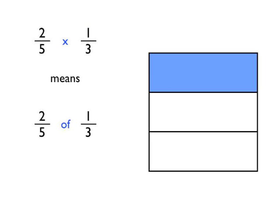Now, what you need to remember when we're multiplying fractions is that the times sign actually really means the word of. So 2 fifths times 1 third means exactly the same thing as 2 fifths of 1 third.